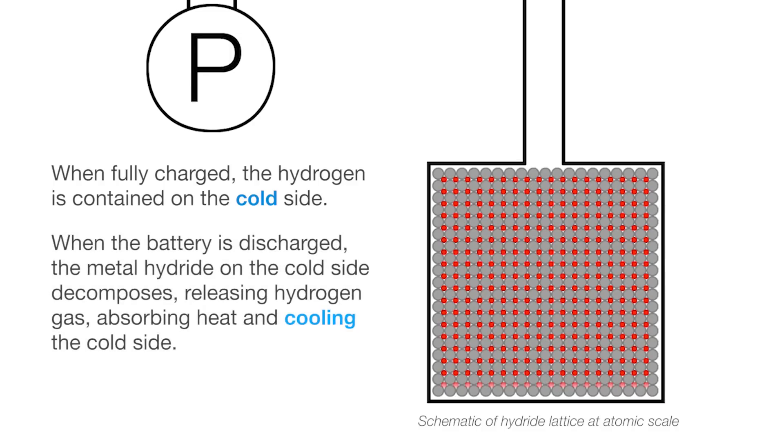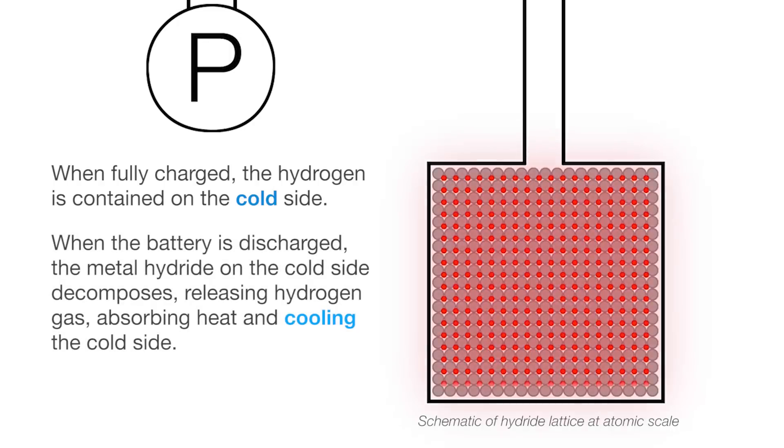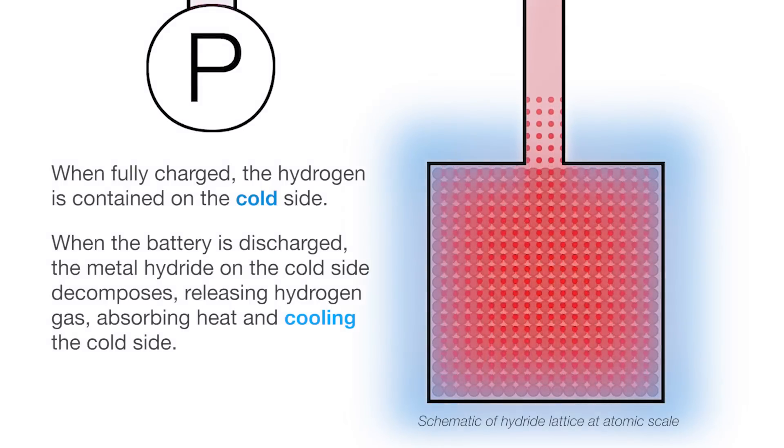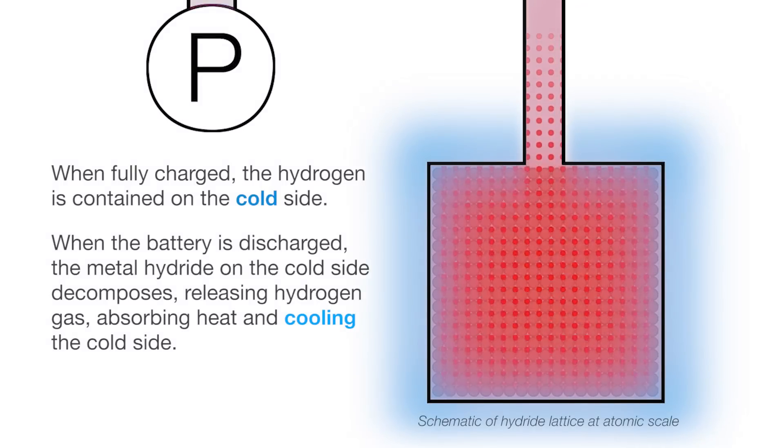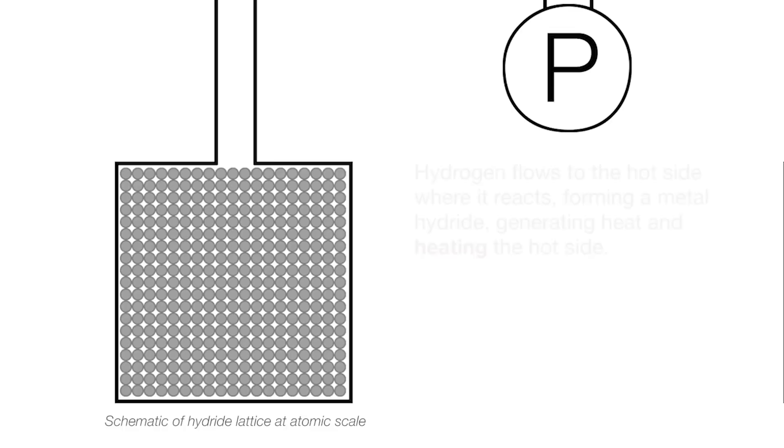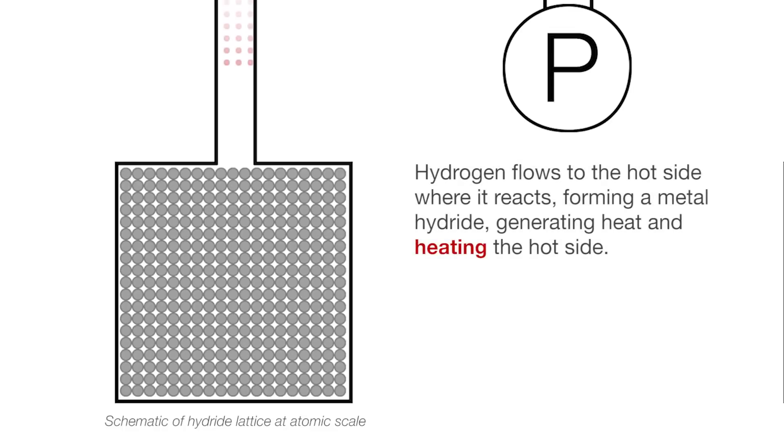When the battery is discharged, the metal hydride on the cold side decomposes, releasing hydrogen gas, absorbing heat, and cooling the cold side. Hydrogen flows to the hot side where it reacts, forming a metal hydride, generating heat, and heating the hot side.